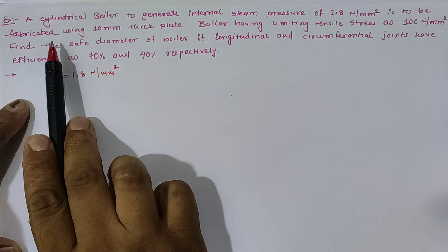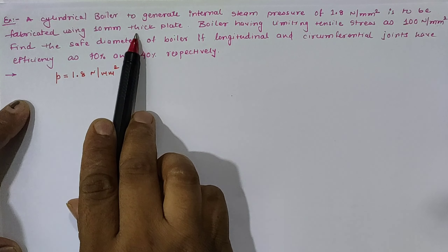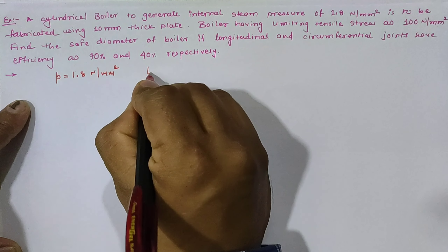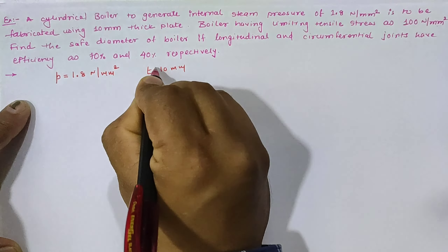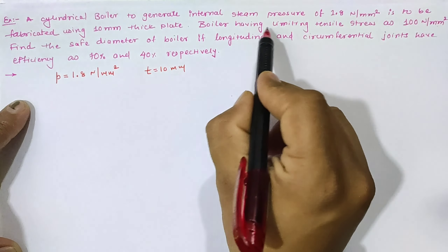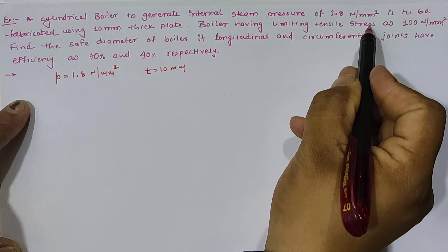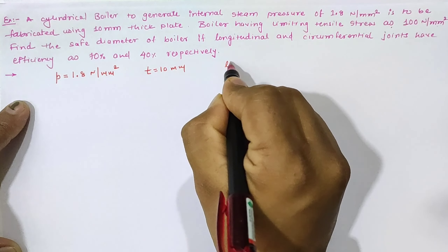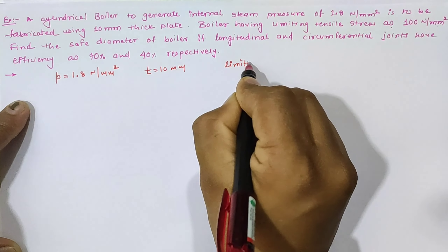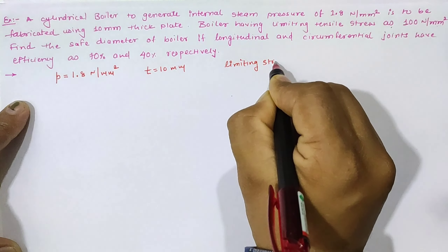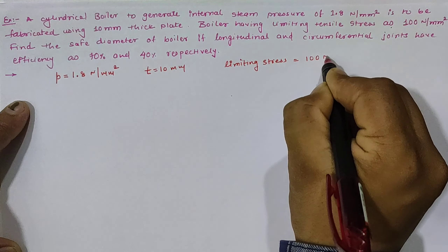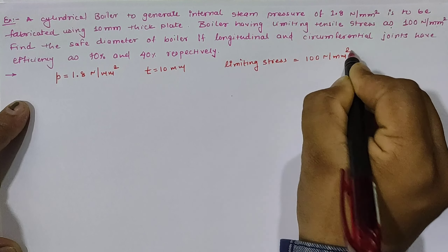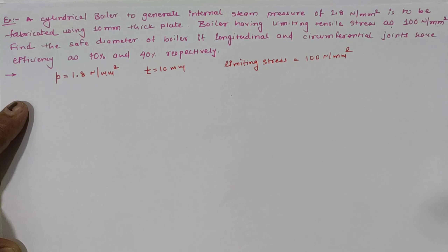The plate thickness is given as 10 mm. The boiler has a limiting tensile stress of 100 Newton per mm square, meaning the maximum stress allowed is 100 Newton per mm square.